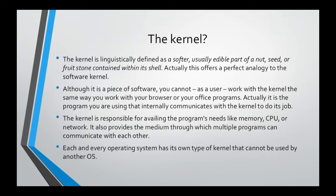For example, when you open your web browser like Firefox and start browsing to google.com, this behind the scenes involves talking to your network card to achieve a network connection with your ISP and then to the internet. It also involves talking to your monitor to display the web page, and gaining input from your keyboard for the URL in the address bar. The program that organizes all of this together is the kernel. The kernel is responsible for providing the program's needs like memory, CPU, and network, but it also provides a medium through which multiple programs can communicate with each other — exchanging data without you noticing.